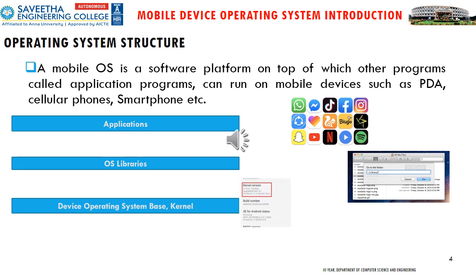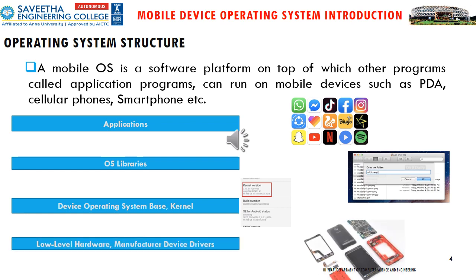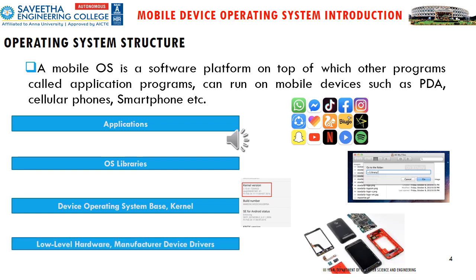The third layer is the device operating system base — the kernel. The kernel is a computer program at the core of a computer's operating system with complete control over everything in the system. It is the portion of the operating system code that is always resident in memory, and it facilitates interactions between hardware and software components. The fourth layer contains the basic hardware components required.